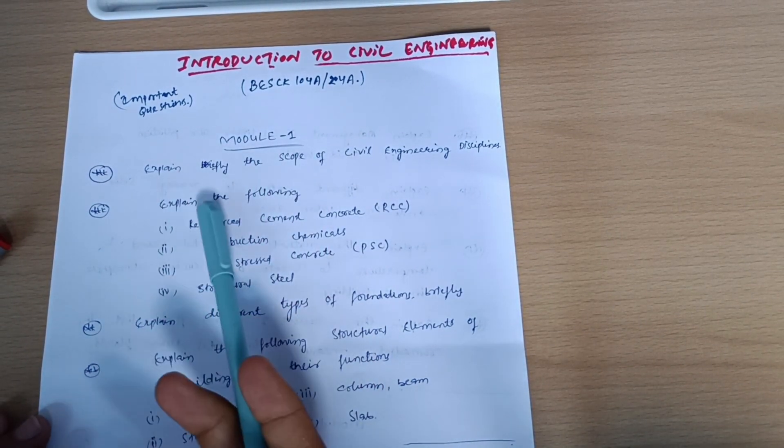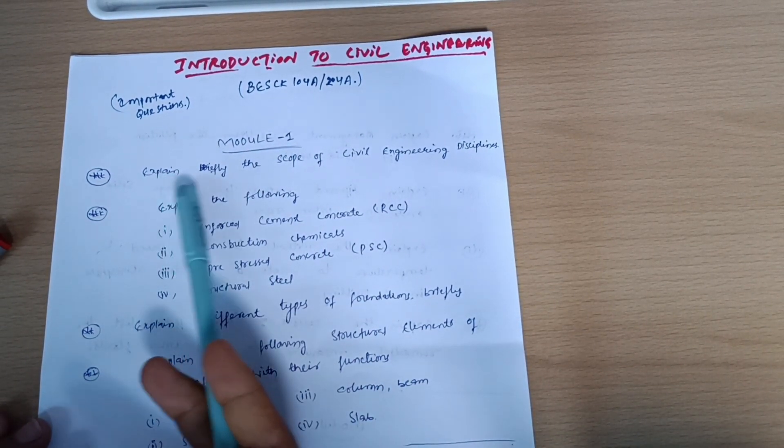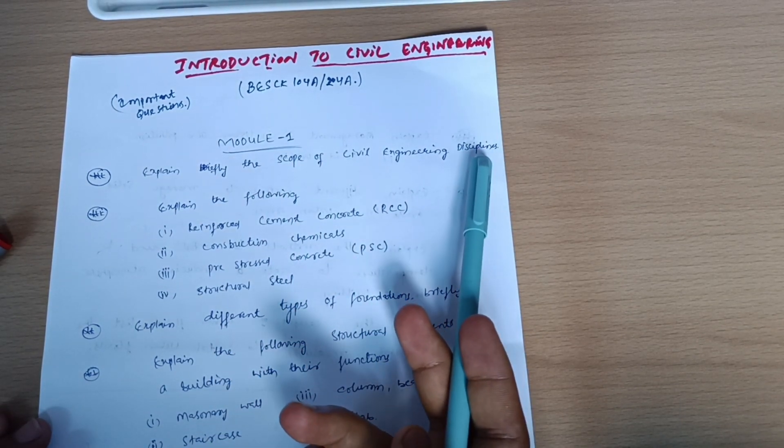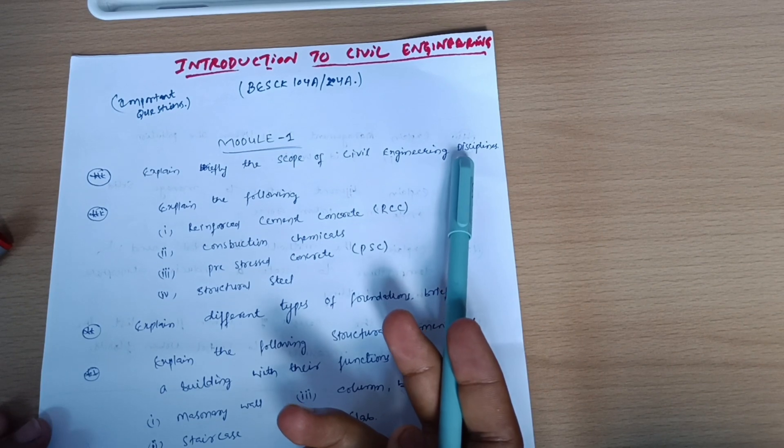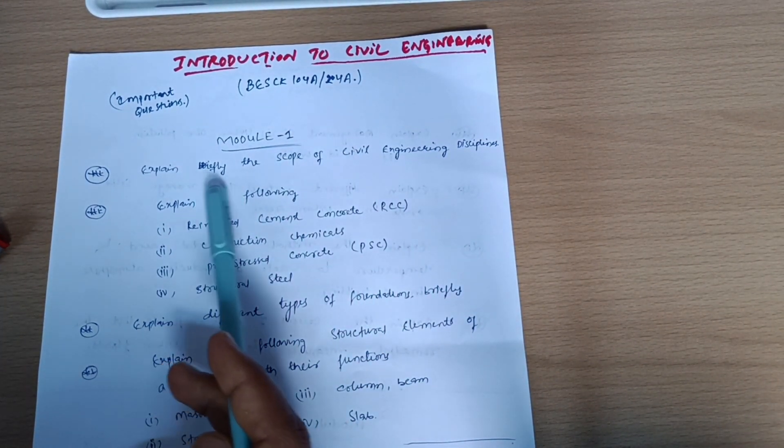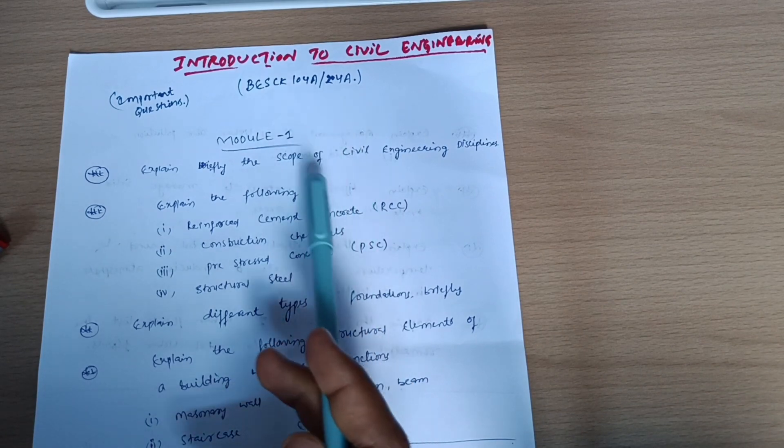From Module 1 you have to cover four questions. Explain briefly the scope of civil engineering disciplines - whatever the disciplines are here, it may be structural engineering, geotechnical, or construction. You have to give the brief description about the scope of civil engineering.